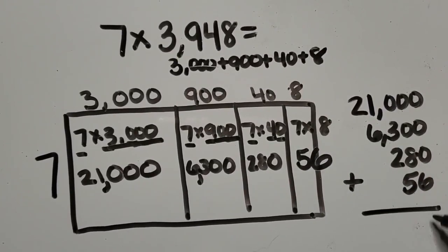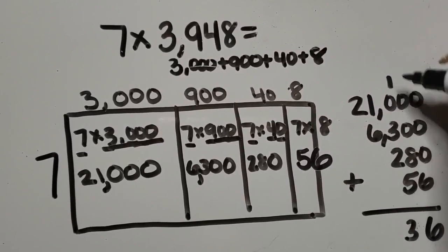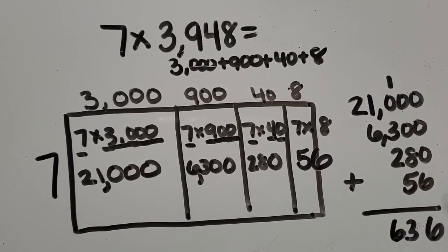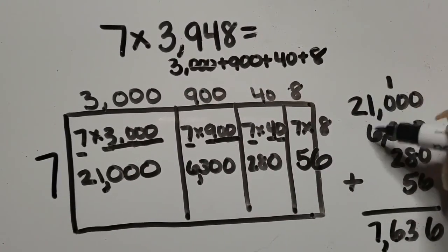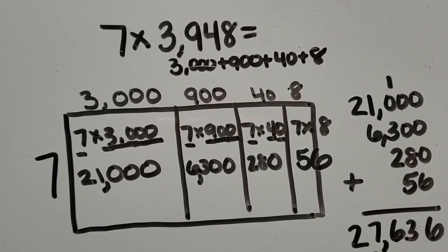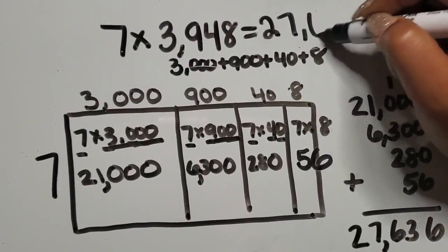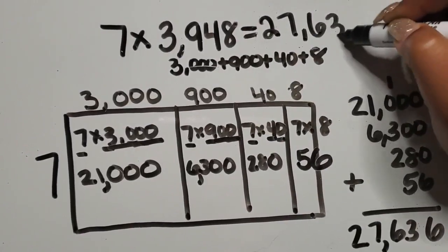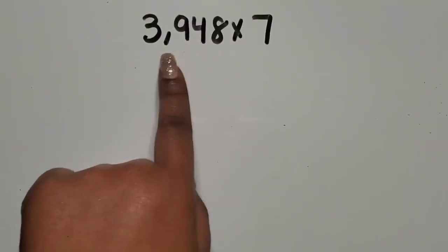We have six in the ones place. Eight tens plus five tens is thirteen tens. Three hundreds plus two hundreds plus one hundred is six hundred. One thousand plus six thousand is seven thousand. And then we have twenty thousand here. So our product is twenty-seven thousand six hundred thirty-six.